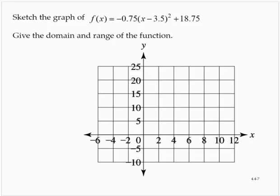Sketch the graph of f(x) equals negative 0.75 times (x minus 3.5) squared plus 18.75, and also give the domain and range of the function.